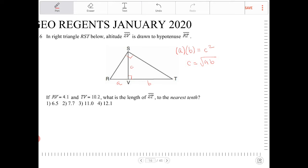Okay. So right now, you're told information about RV, which is 4.1, which is my length A. So A is equal to 4.1. And then B is TV, which is 10.2.